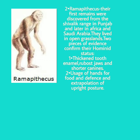The second is Ramapithecus. Their first remains were discovered from the Shivalik range in Punjab, and later in Africa and Saudi Arabia. They lived in open grasslands. Two types of evidence confirmed their hominid status: first, thickened tooth enamel, robust jaws, and smaller canines; and second, usage of hands for food gathering and indications of upright posture.